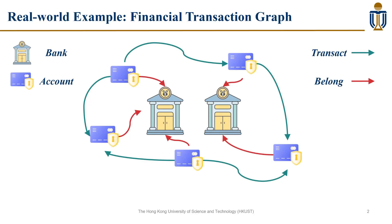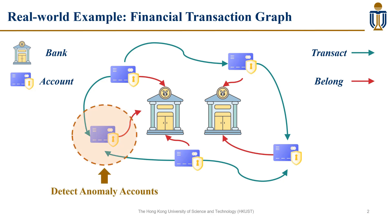Firstly, let's discuss a real-world scenario. When we transact between other accounts, they build a graph that involves banks and accounts. One of the most crucial tasks is to detect anomaly accounts based on transactions for financial security.